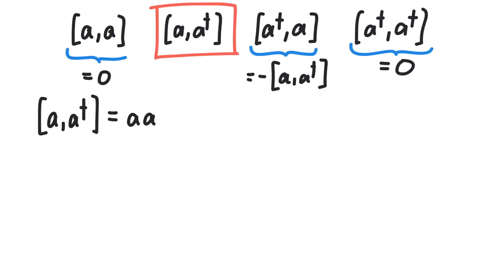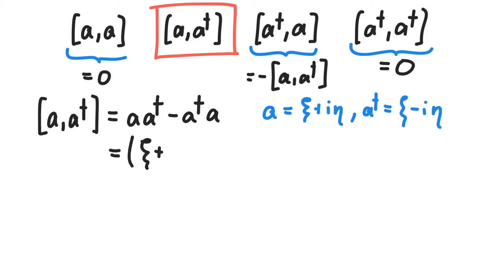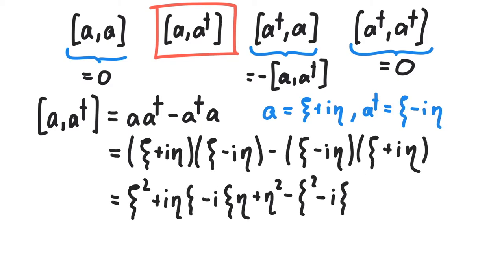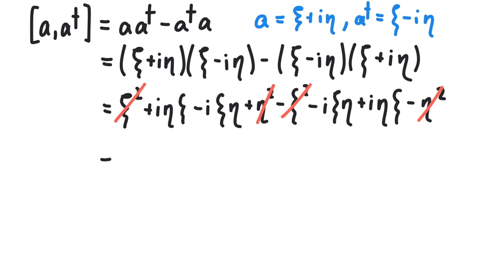This yields a a-dagger minus a-dagger a, and after inserting the definitions in terms of psi and eta, we end up with the commutator of psi and eta. Well, good thing we calculated this last time.